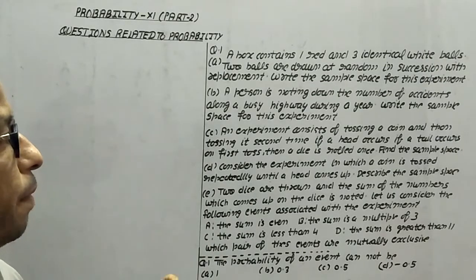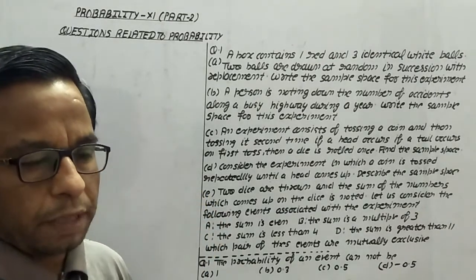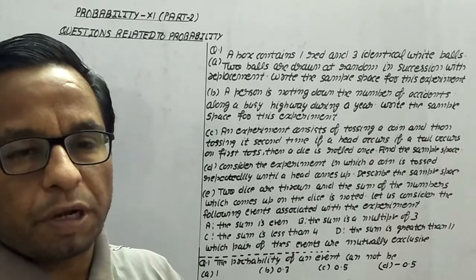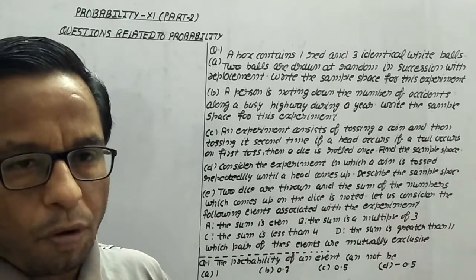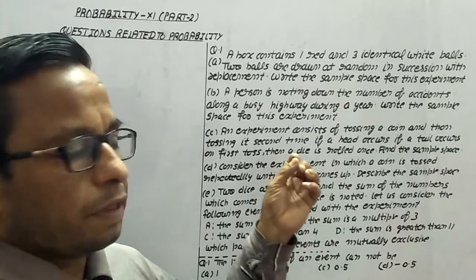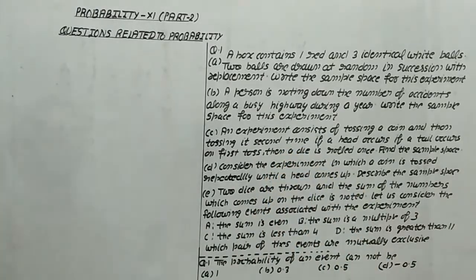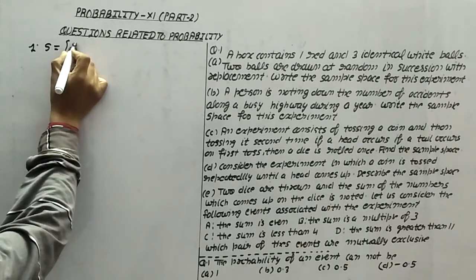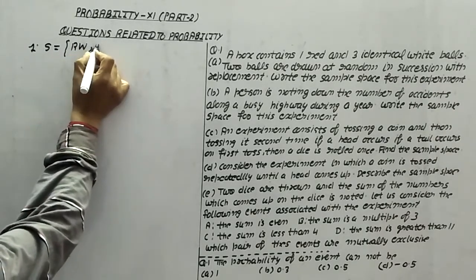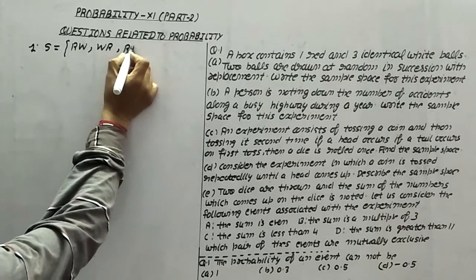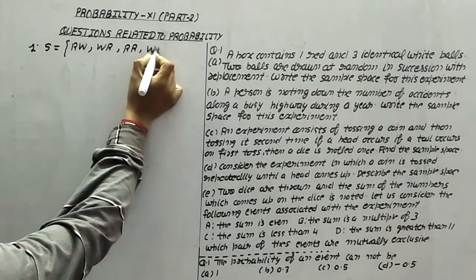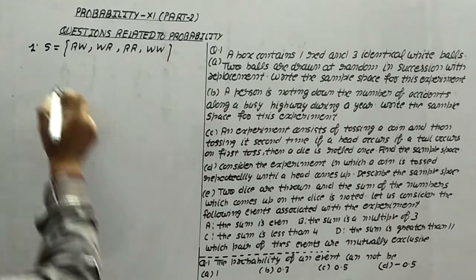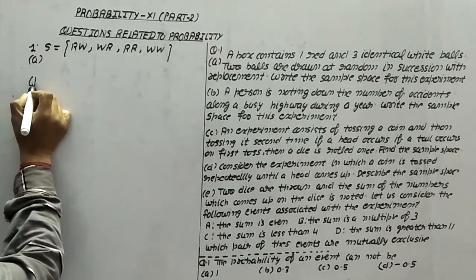First of all, we have identical white balls, meaning for white balls we can take the simple notation W, and for red ball we can take the notation R. On this basis, the sample space will be {RR, RW, WR, WW}. This will be the sample space for question 1A.